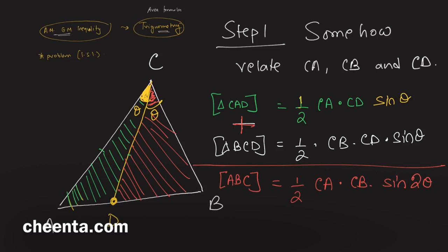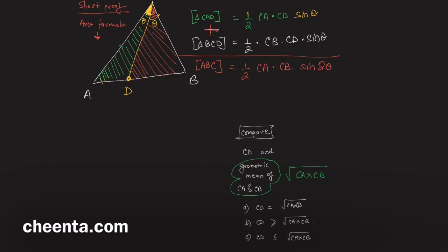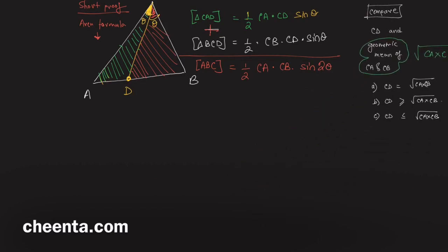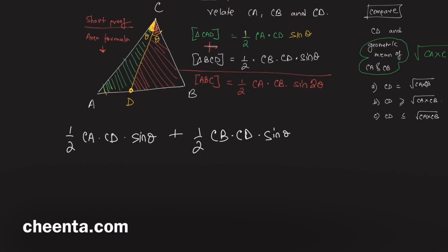Can you prove the area formula? Write a short proof in the comment section. You can also pause the video and try the problem now — I've given you step one of the solution. Remember, just watching will not help; you have to try it yourself. So we have: half of CA times CD times sine θ plus half of CB times CD times sine θ equals half of CA times CB times sine 2θ.